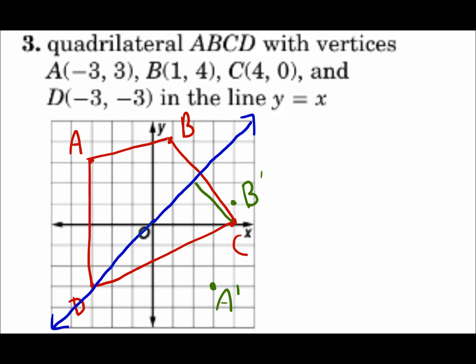C is two diagonals from the line. We will go two more to C prime. D is already on the line. So remember, if it's already on the line, it does not need to reflect. And we don't make a new point because that point didn't move. So it doesn't become D prime. It just stays as D.